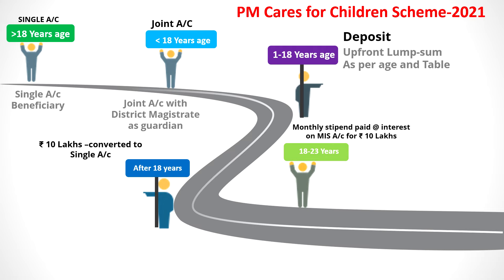From age 18 to 23 years, for a period of five years, one account called the PM Cares account will be opened in the name of the child. It will be operated similar to a Monthly Income Scheme (MIS) account. A monthly stipend will be paid to the child at the MIS interest rate on rupees 10 lakh. So whatever interest would be paid on an MIS account for 10 lakh rupees, that interest will be paid as a stipend to this child for five years.